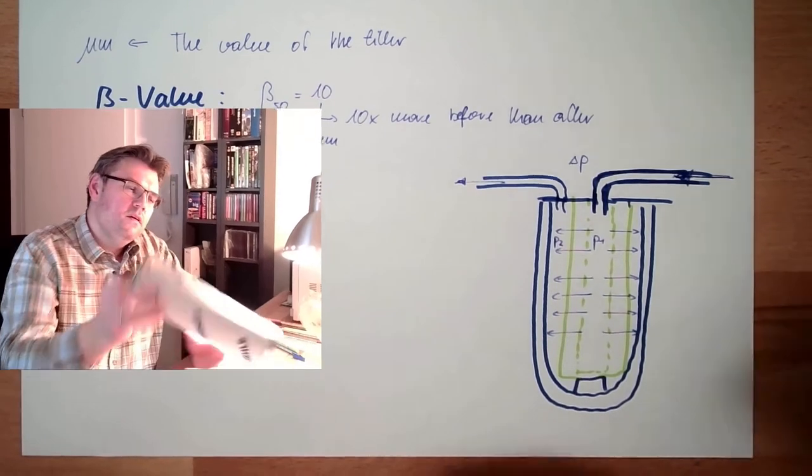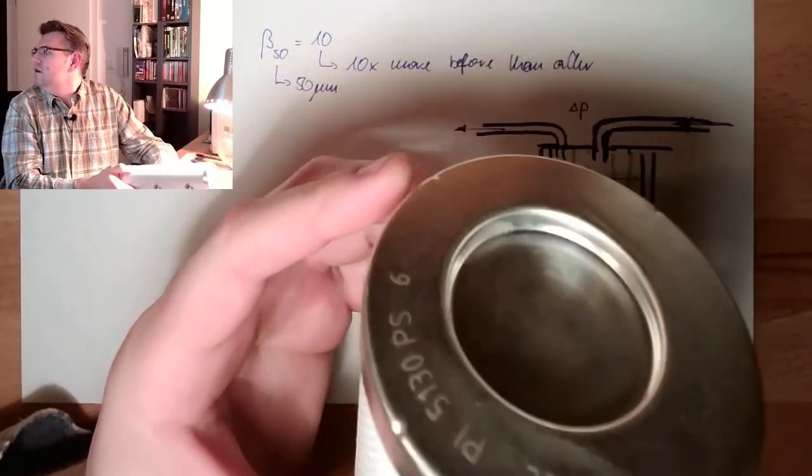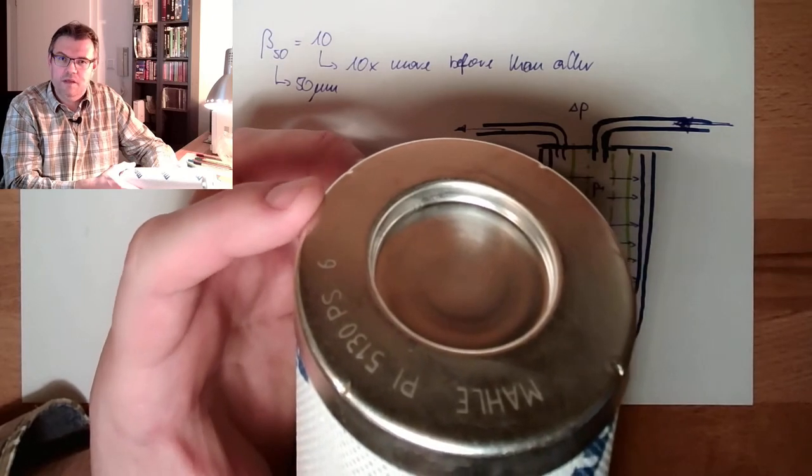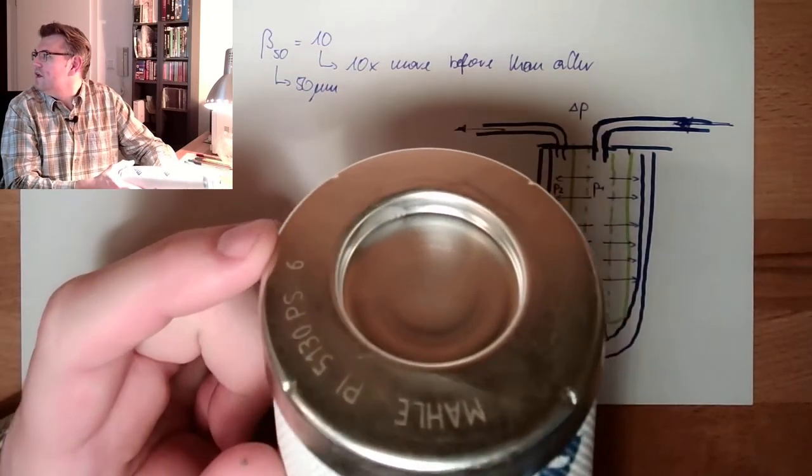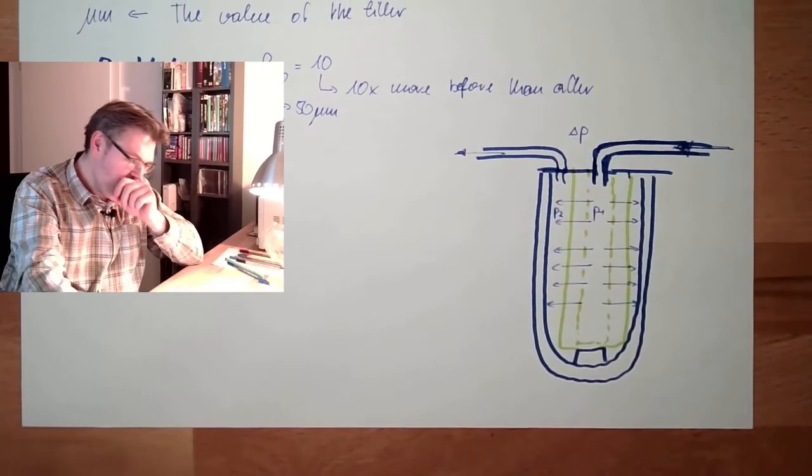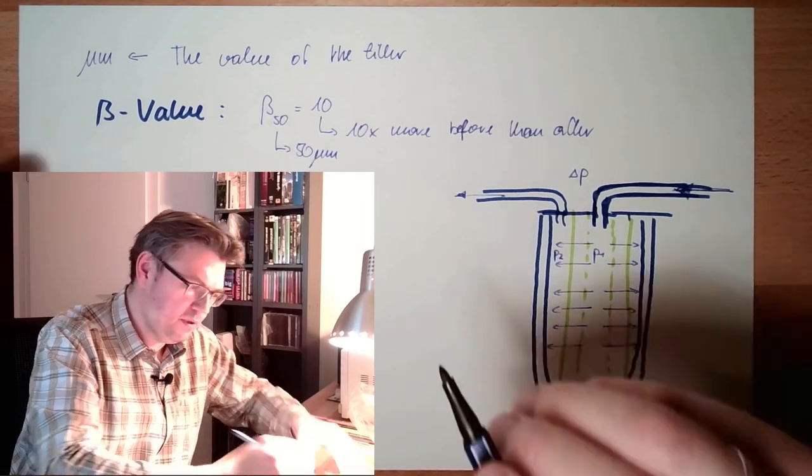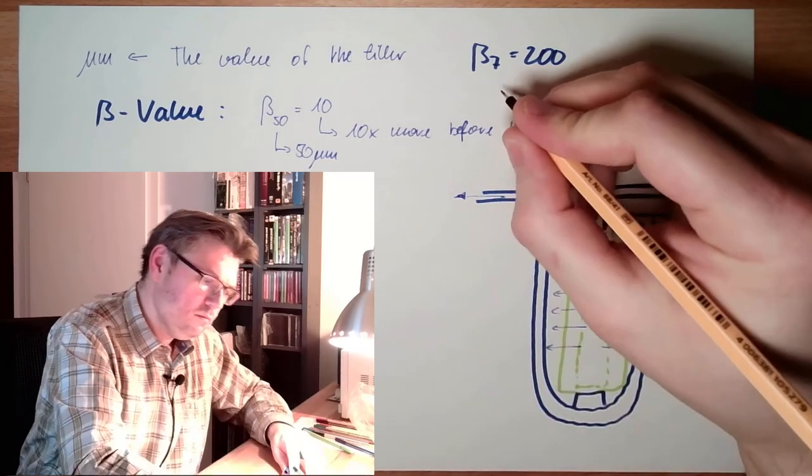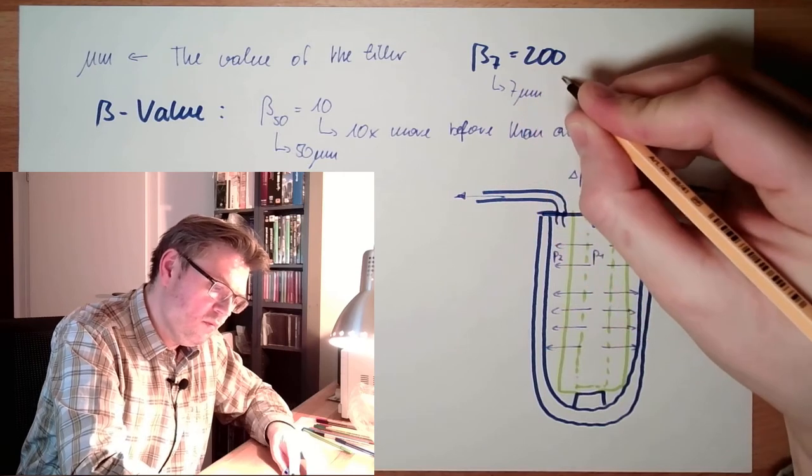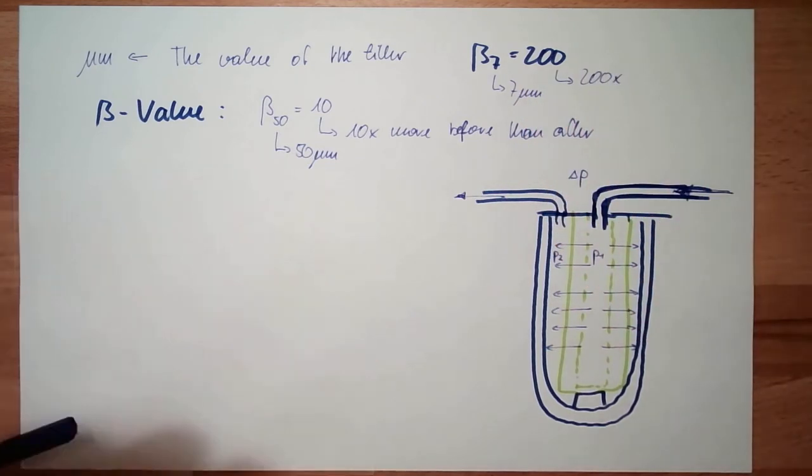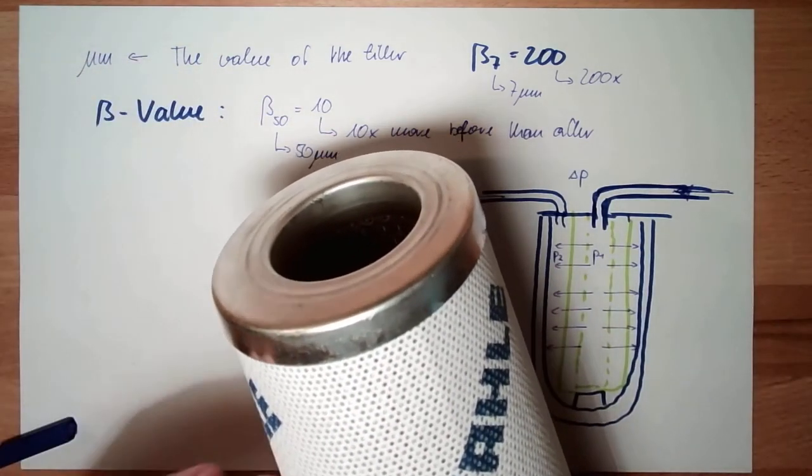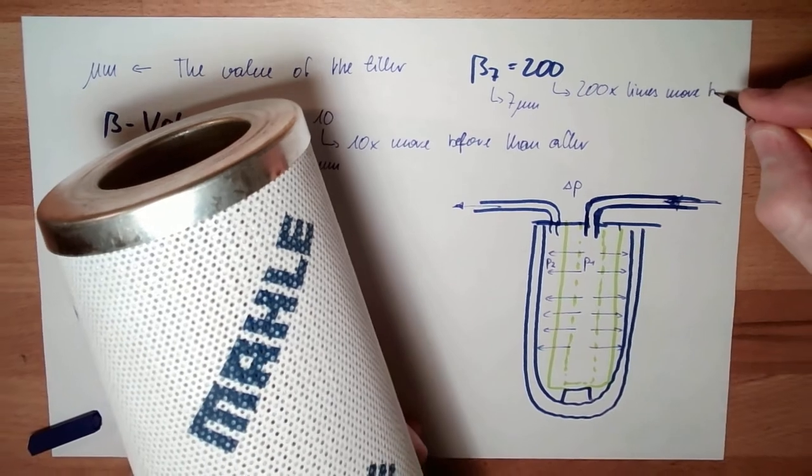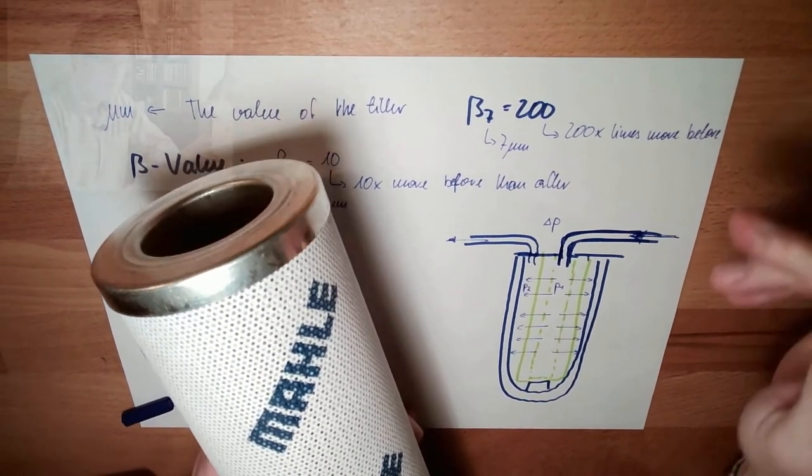Usually they have here a number. With this number, you can look up the datasheet. This particular one, this 6 here at the end, means it's like 6 microns. The beta value, beta 7, of this particular element, beta 7 is 200. At 7 microns, I have 200 times more particles here than here. Everything else is held back. Two hundred times more at the entry before.